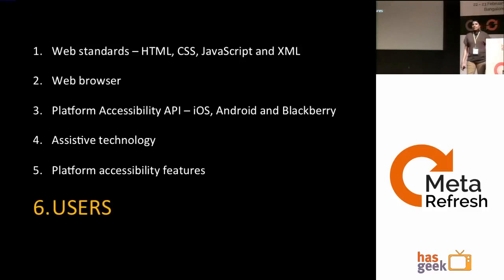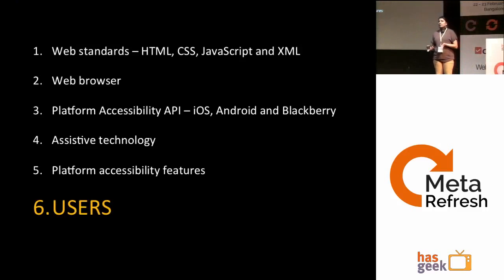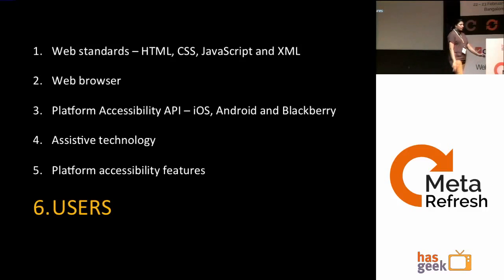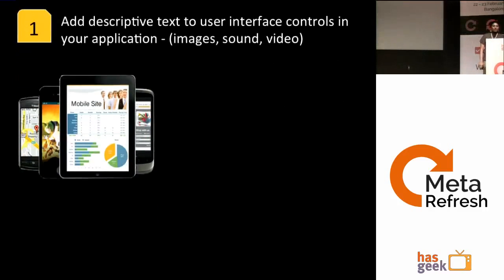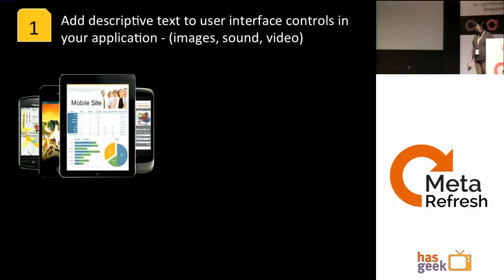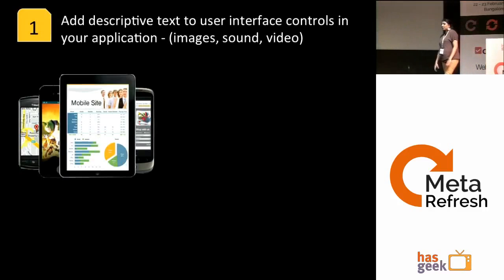The biggest ingredient is users. Without them, we don't even need terms like accessibility, usability, or user experience — or these standards. Now, coming to the principles: the first is to add descriptive text to your user interface controls. This is the same thing we've been doing for web as well — we need alternate text.